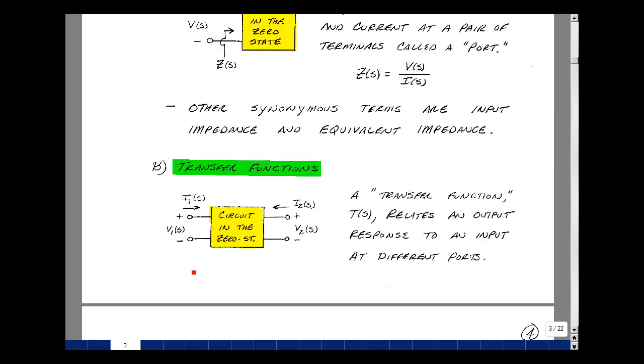Extending this idea to a pair of ports, we could then define the following. I'll call the voltage here V1(s) and the voltage here V2(s), and I'll define the currents as entering the two port. And again, it's a circuit in the zero state.